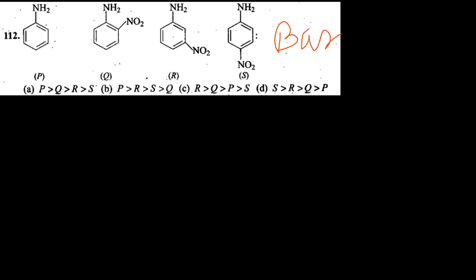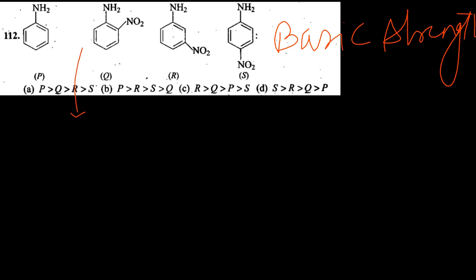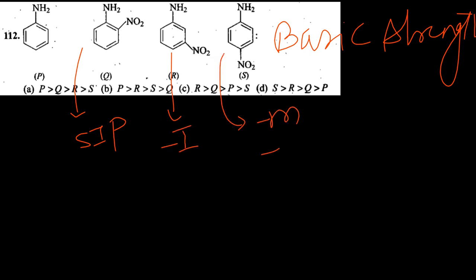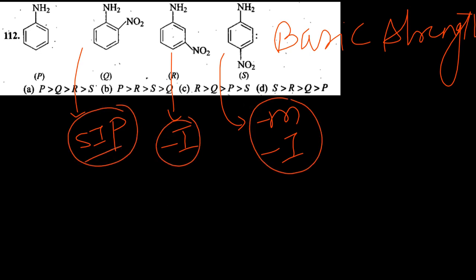Next question also on basic strength: NO2 group here produces SIP. The most basic will be P (no withdrawing group). Minus M and minus I withdraw electrons, and SIP decreases basic strength. So the most basic is P.